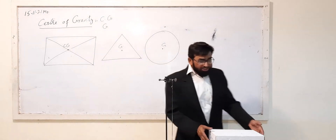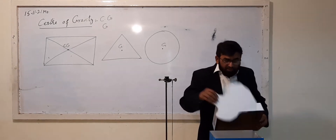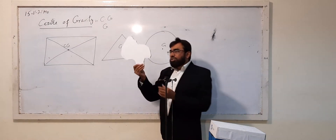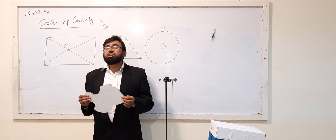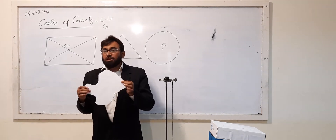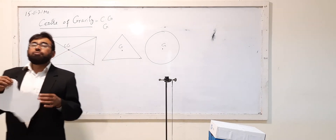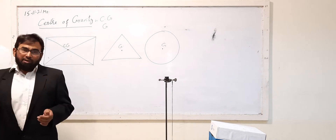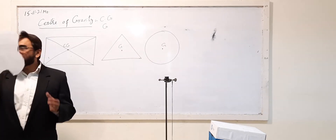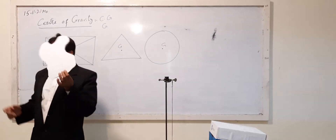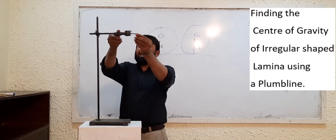If you have an irregular shaped object — for example, an irregular shaped lamina like this — we are going to find out the center of gravity of this irregular shape. This type of object is called a plain lamina, and we are going to find out its center of gravity.